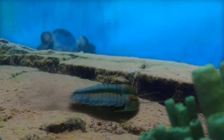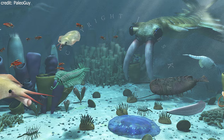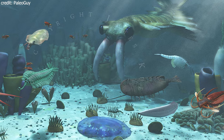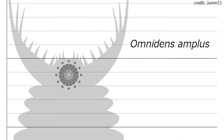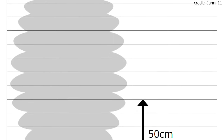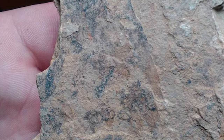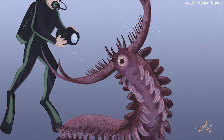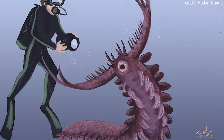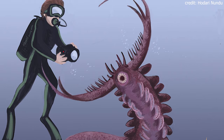The Cambrian was the first time period of the Paleozoic Era, covering 538.8 million years ago to 485.4 million years ago. Omnidens is only known from a single fossil found in the Burgess Shale Formation in British Columbia, Canada. It is believed that Omnidens could reach a length of 1.5 meters or 4.9 feet, making it the largest animal of the Cambrian.